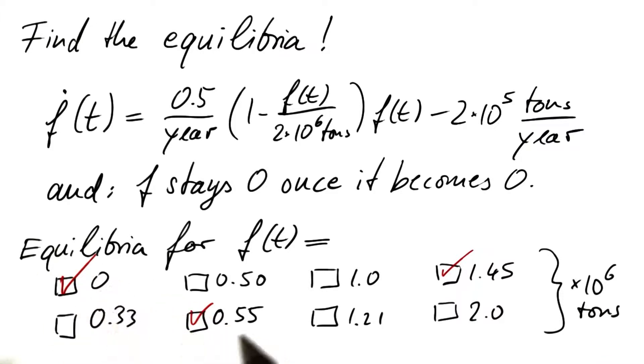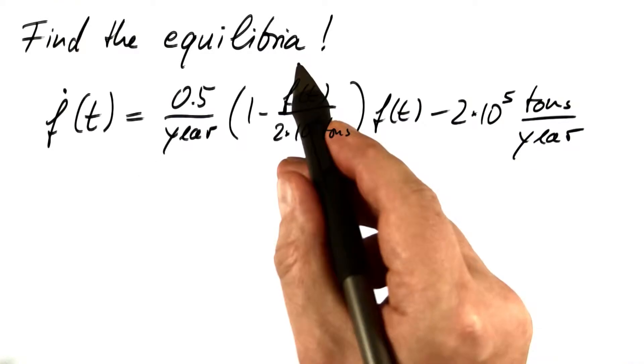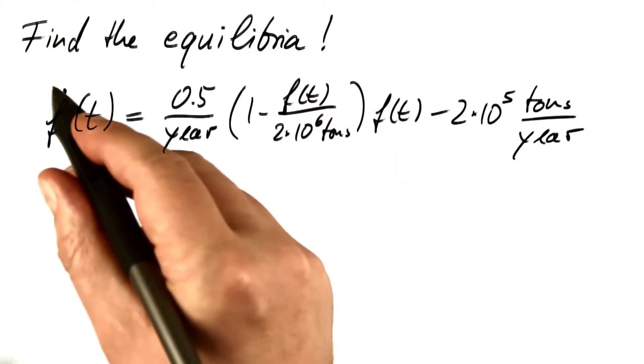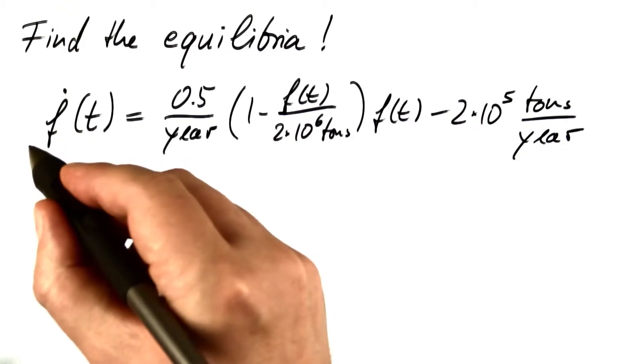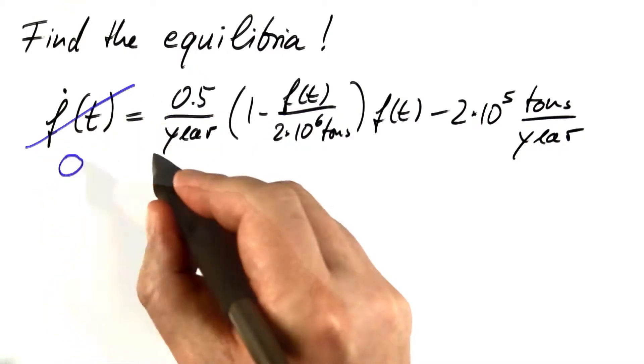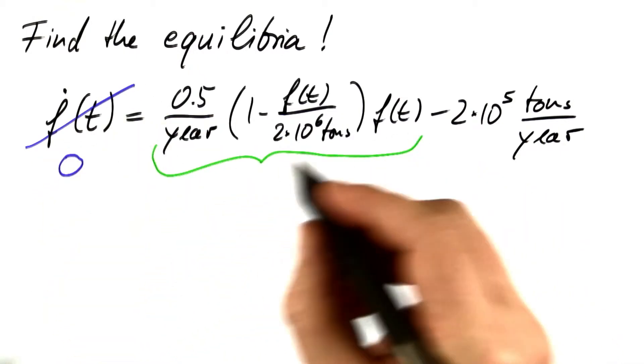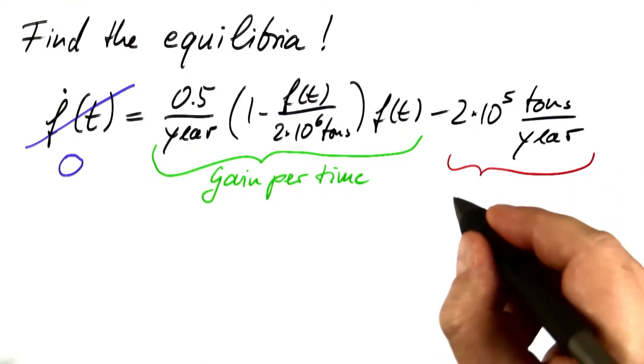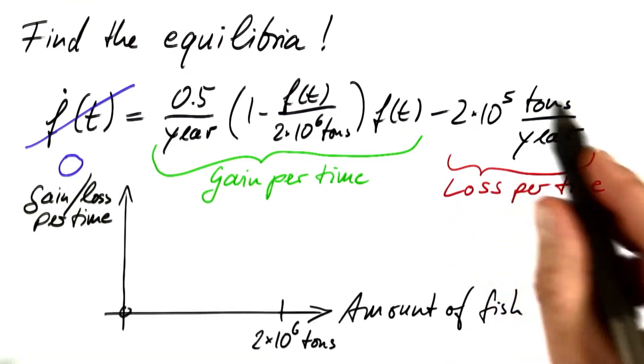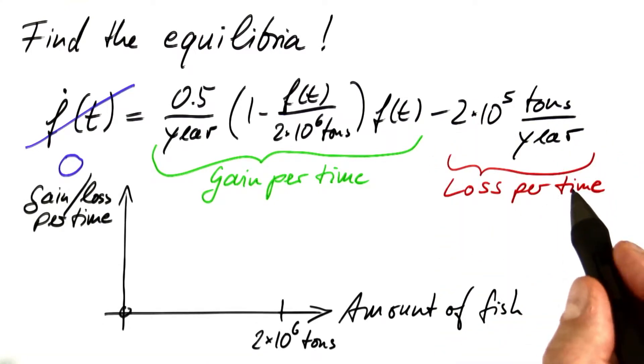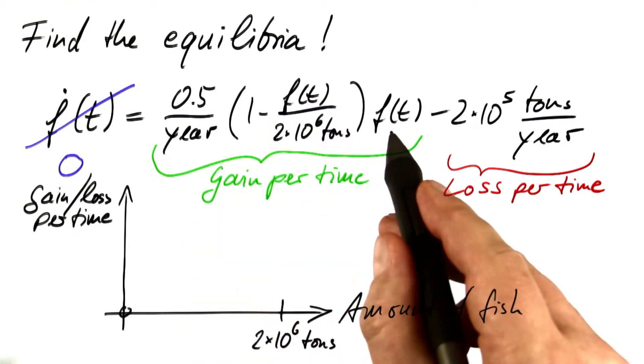The first one is obvious, but now let's look into where these two other equilibria come from. If we reach an equilibrium, the amount has to become constant. The rate of change becomes zero, which means that the gain per time has to balance the loss per time. The loss per time is constant, but the gain per time depends on the current amount.